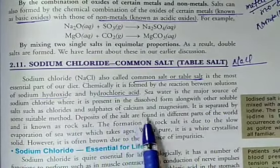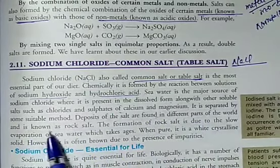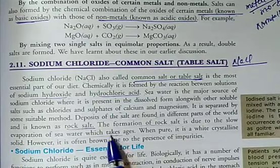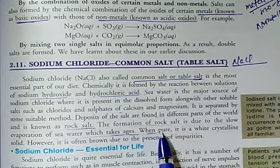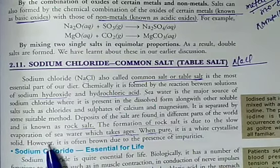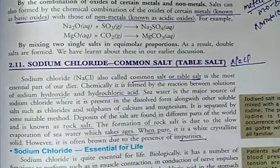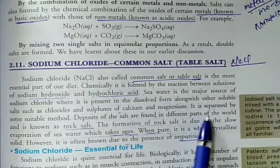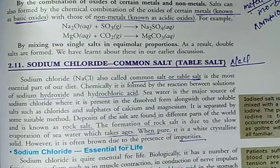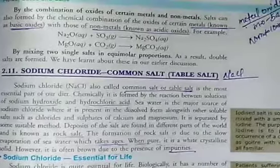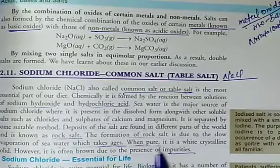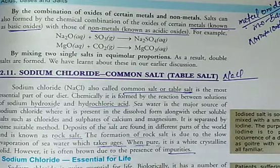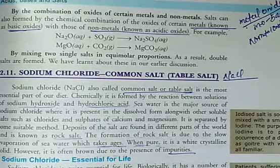Deposits of salt found in different parts of the world are known as rock salt. The formation of rock salt is due to the slow evaporation of sea water, which takes ages. When pure, it is a white crystalline solid; however, it is often brown due to the presence of impurities.